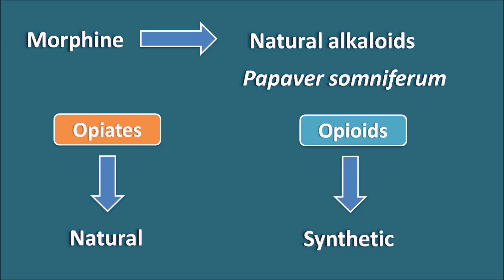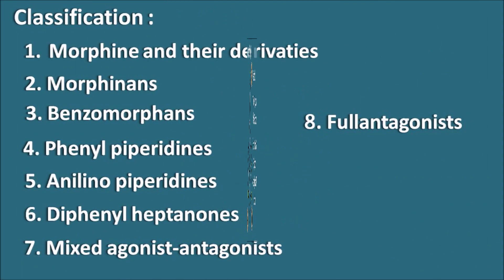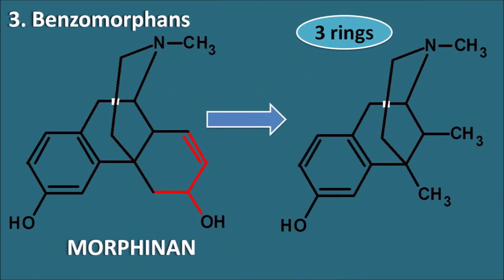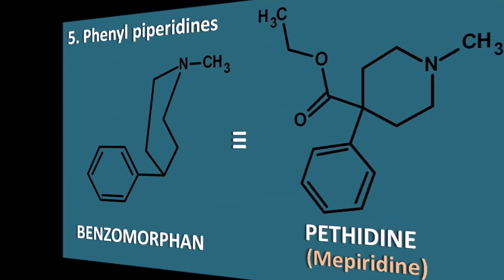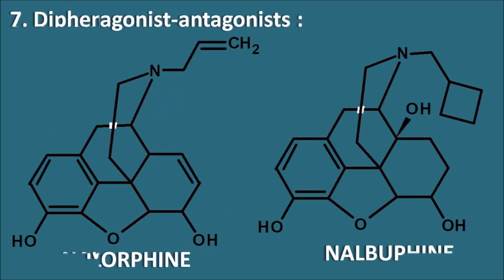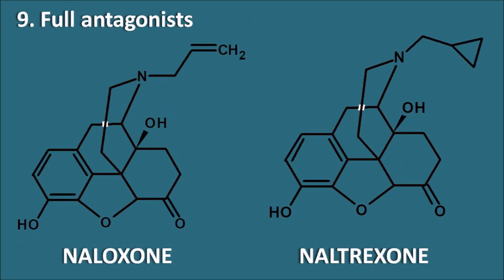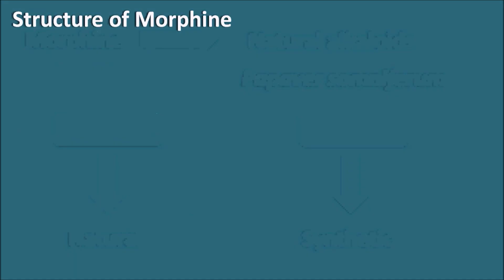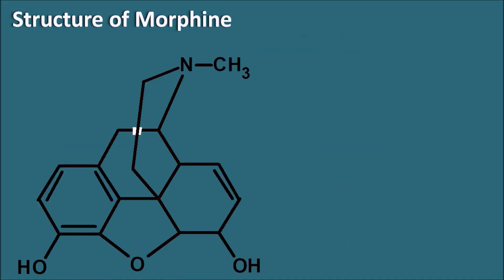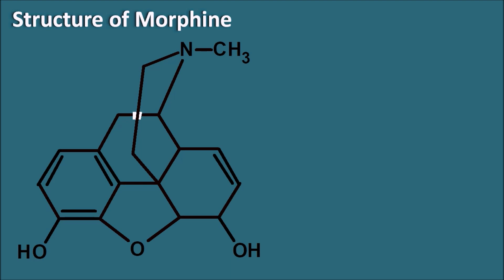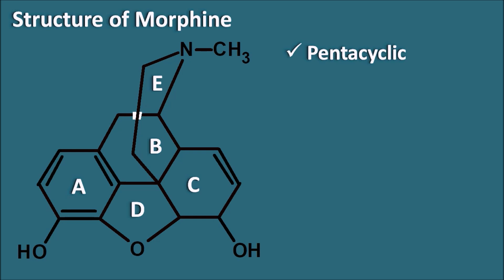Today in this video, we will see the classification of opiates and how they are derived from the structure of morphine. First, let us see the structure of morphine. This morphine structure has five cycles, so it is a pentacyclic structure with ring A, ring B, C, D, and E — five ring systems.